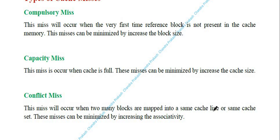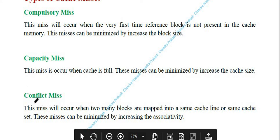There are three types of cache miss. The first is compulsory miss, also called cold start miss or first reference miss — this occurs when a block is referenced for the very first time and is not present in cache. This miss can be minimized by increasing the block size. The second is capacity miss, which occurs when the cache memory is full. It can be minimized by increasing the cache memory size.